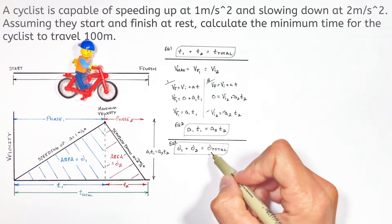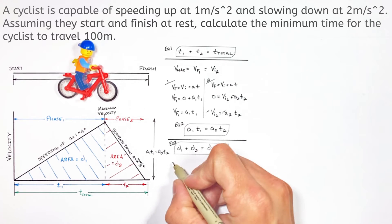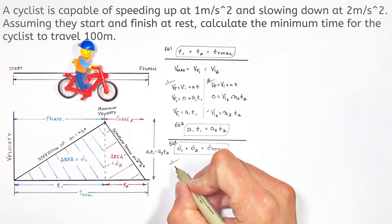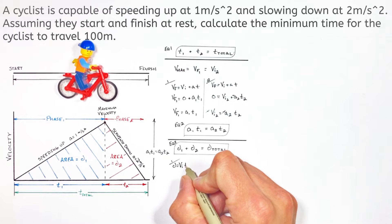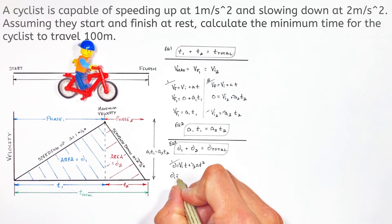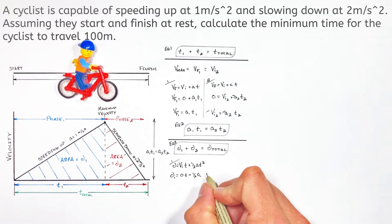Now, much like we did with our equation for velocity, I'm going to apply the displacement equation to each of the phases of motion. So D1 is equal to the initial velocity that's zero times T plus one half A1 T1 squared.